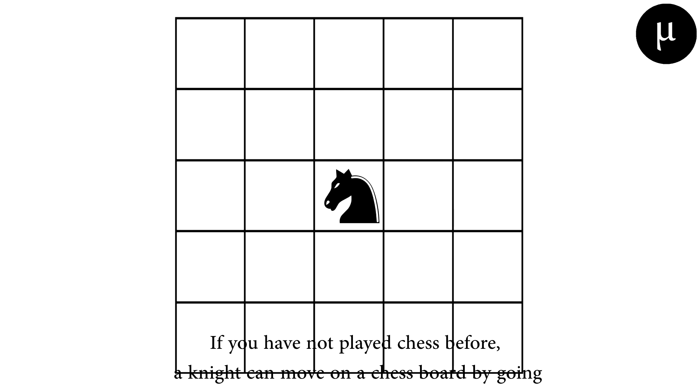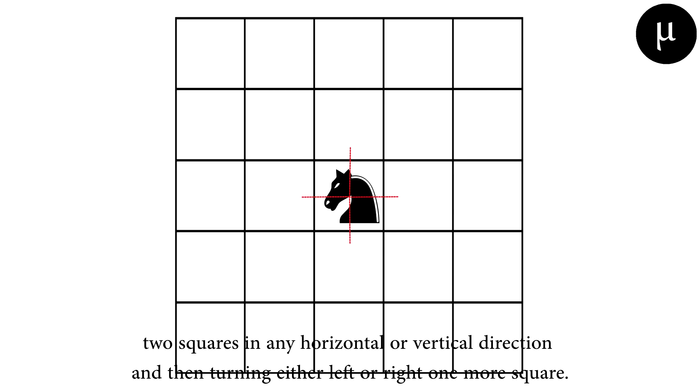If you have not played chess before, a knight can move on a chessboard by going two squares in any horizontal or vertical direction and then turning either left or right one more square.